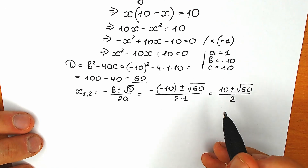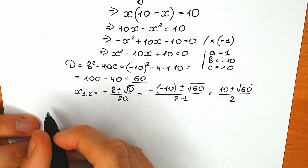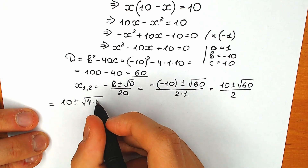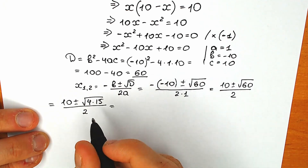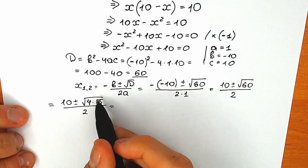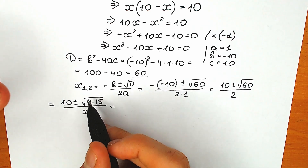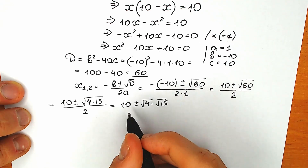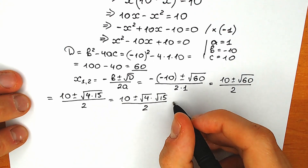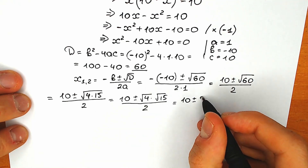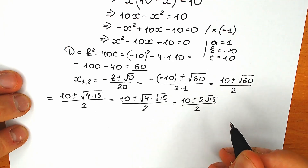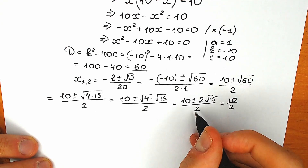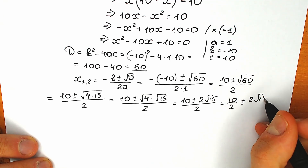Now let's simplify the square root of 60. We write 60 as 4 times 15, so we have 10 plus or minus square root of 4 times square root of 15, divided by 2. We can split the square root: square root of 4 equals 2, so we get 10 plus or minus 2 times square root of 15, over 2. We can split the fraction: 10 over 2 plus or minus 2 square root of 15 over 2.